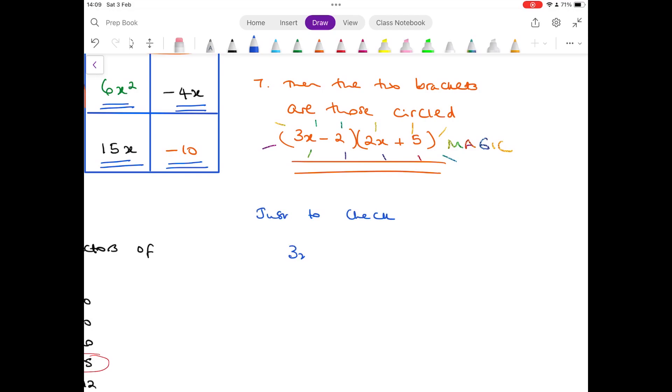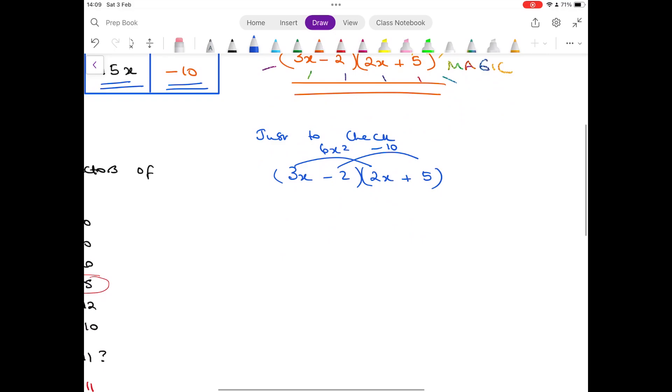So the first two terms gives you 6x squared, the last two minus 10. And then the inner ones minus 4x, the outer ones plus 15x. So indeed we finish with what we started with.